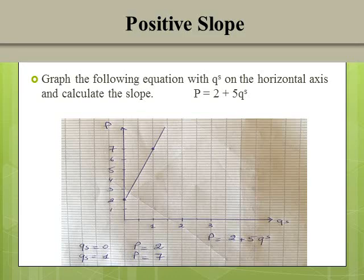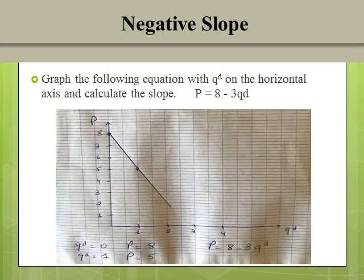Now we are going to take an example about negative slope. The equation is p = 8 − 3qd. For qd = 0, p = 8. For qd = 1, p = 8 − 3×1 = 5. I will plot the point (0, 8), then the second point (1, 5), and sketch the line. As we can see in the graph, the line is moving downward from the left to the right, so the slope is negative.